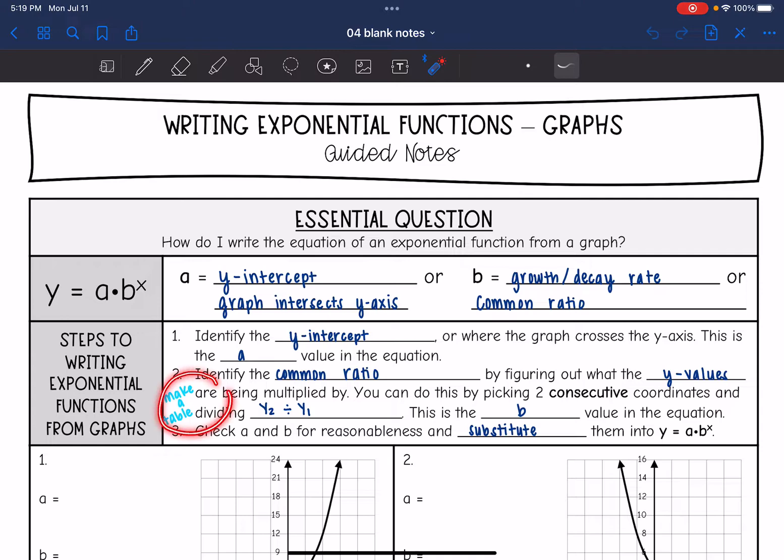Sometimes I find it helpful to make a table for this step because on a graph it's a little bit difficult to keep straight the y values and what order they're in. So if we make a table, then we can label them y1 and y2. And that will help us whenever we're finding that b common ratio. Then we're going to check a and b for reasonableness and substitute them into the function.